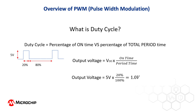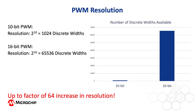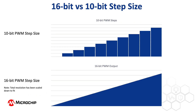So then why is a 16-bit PWM better than a 10-bit PWM? Many microcontrollers have a 10-bit PWM module, which is able to output up to 2 to the 10, which is 1024 discrete widths. However, a 16-bit PWM module is able to output 2 to the 16, which is 65,536 discrete widths. So a 16-bit PWM module yields up to 64 times the resolution of a 10-bit PWM module, decreasing the step size between power levels and making it much easier to control your output device, such as a motor, with exactly the power level needed for your application.